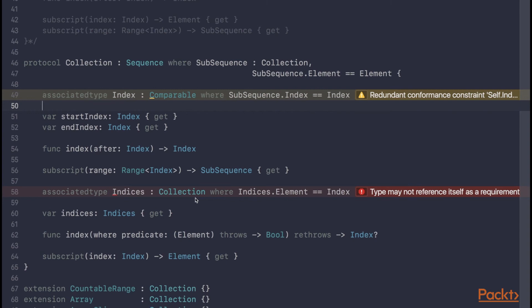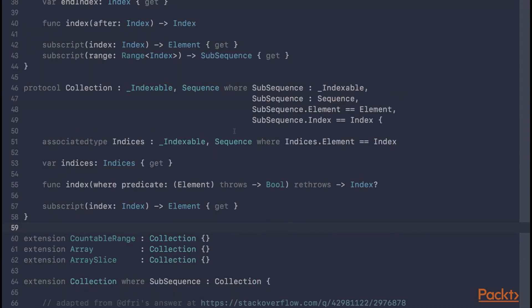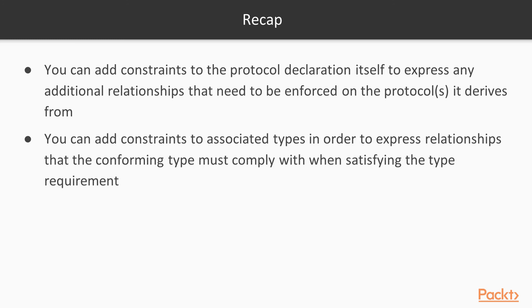This would also let us get rid of the last constraint where subsequence conforms to collection in our extension. But until then, we still have to use the _Indexable protocol. To recap: in Swift 4, you can add constraints to the protocol declaration itself to express additional relationships enforced on derived protocols. You can also add constraints to associated types to express relationships the conforming type must comply with — for example, a collection's indices must have elements that are the same type as the collection's index type.